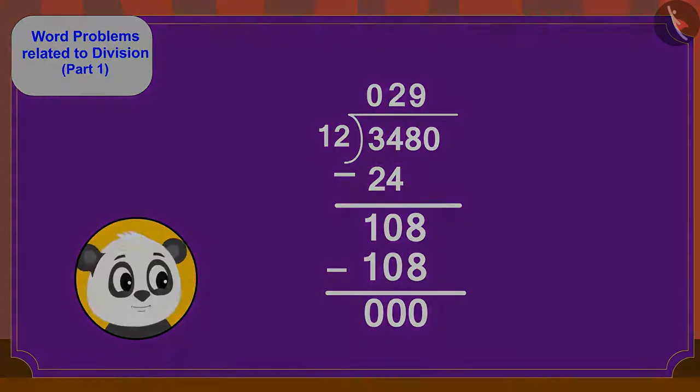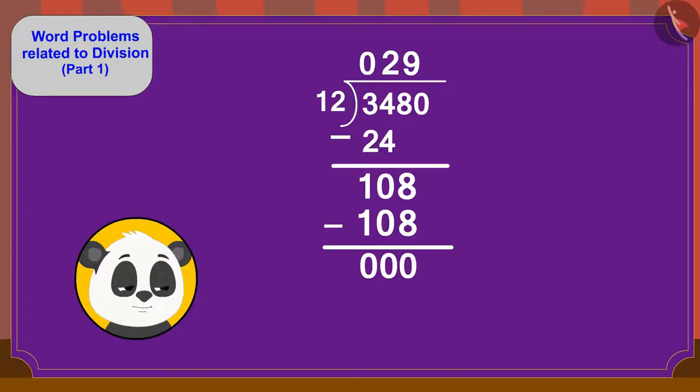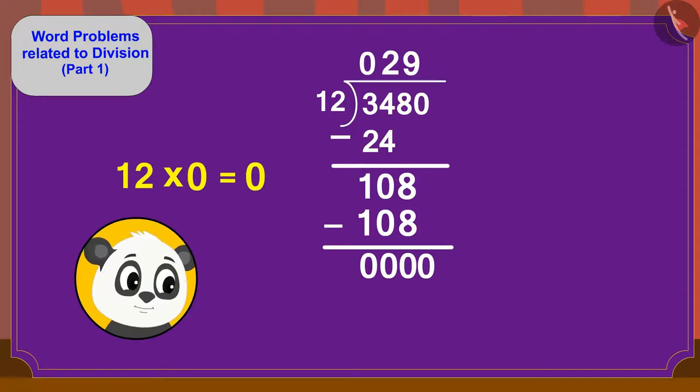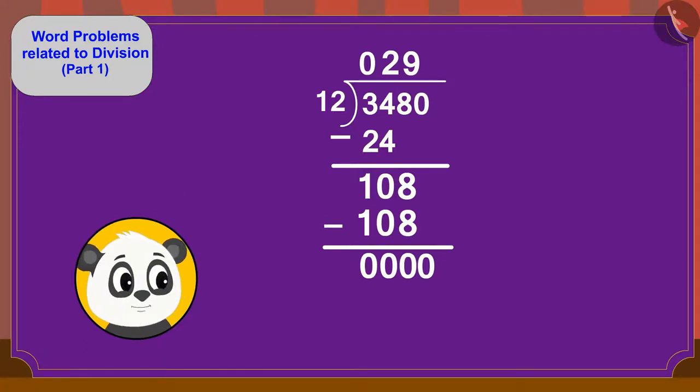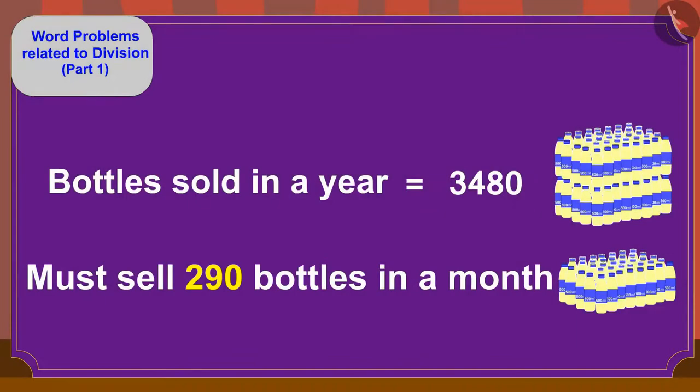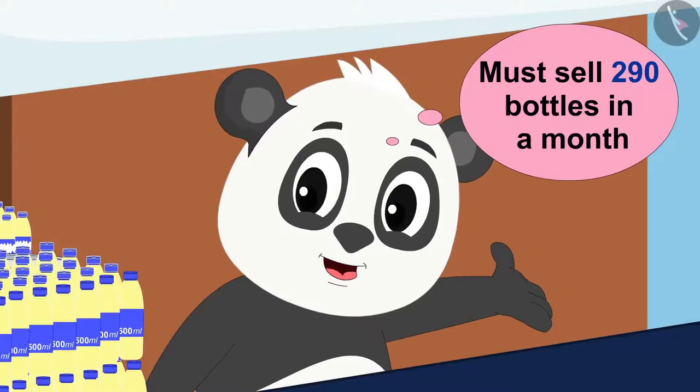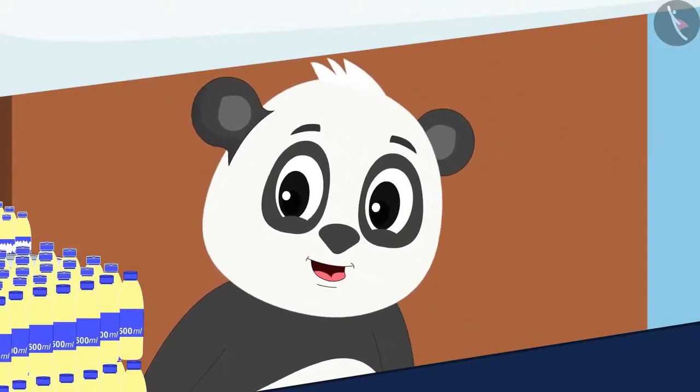Now we will write the last digit 0 down here next to this 0. Can we divide 0 by 12? Yes, 12 times 0 is 0. So we will write 0 up here, and 0 minus 0, nothing left. Golu must sell 290 masala milk bottles every month.